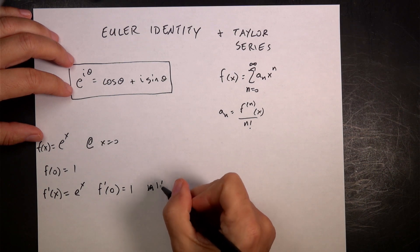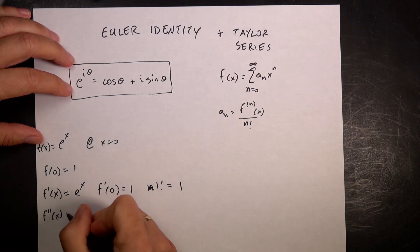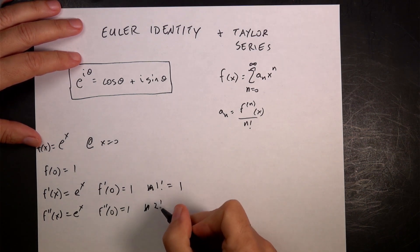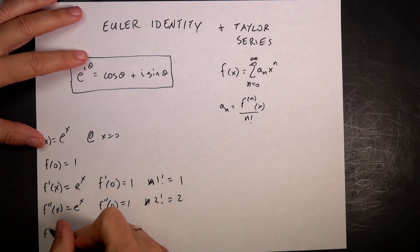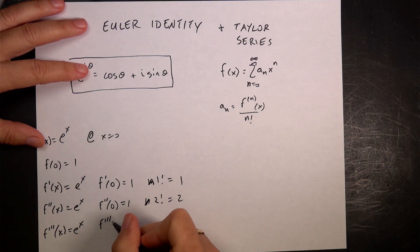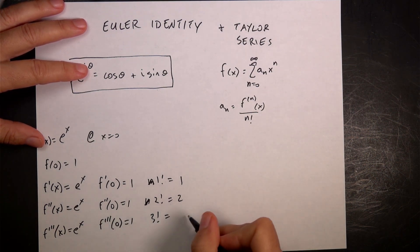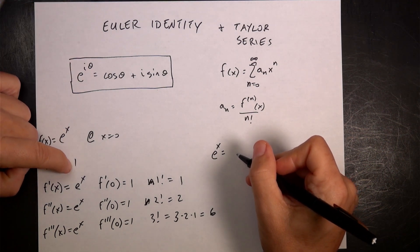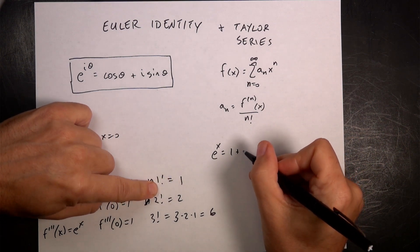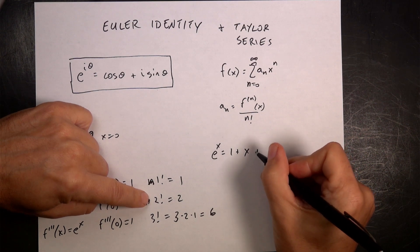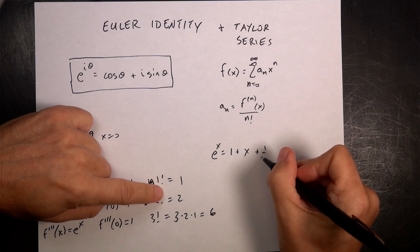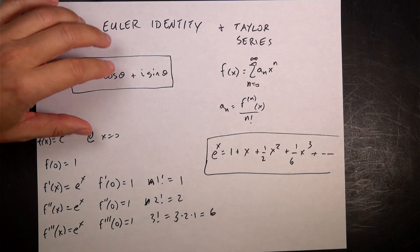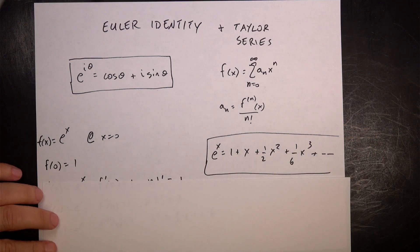f double prime of x is e to the x, so f double prime of zero equals one, and two factorial equals two. f triple prime of x is e to the x, f triple prime of zero equals one, and three factorial is three times two times one, which is six. So I can write e to the x as one plus x over one, plus x squared over two, plus x cubed over six, and then you keep going on.